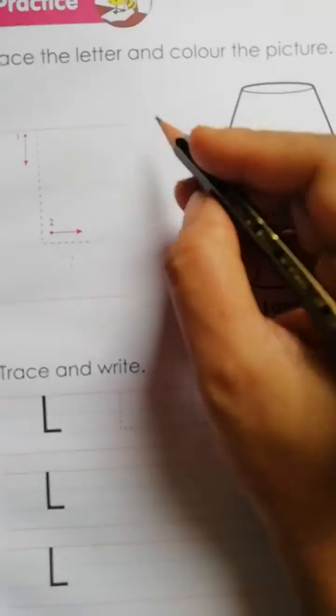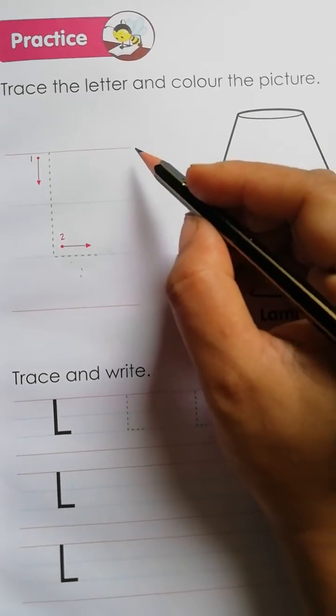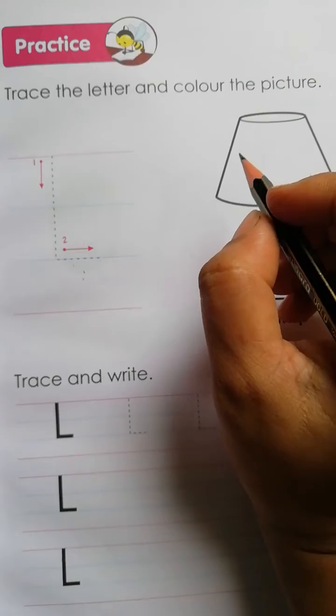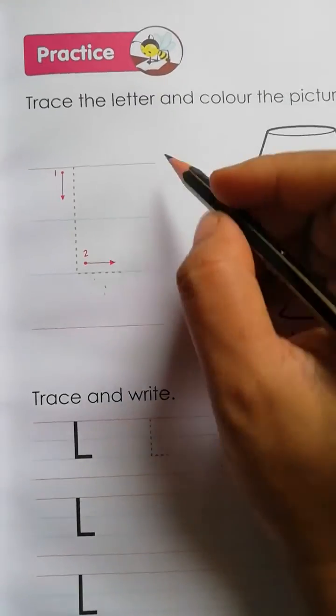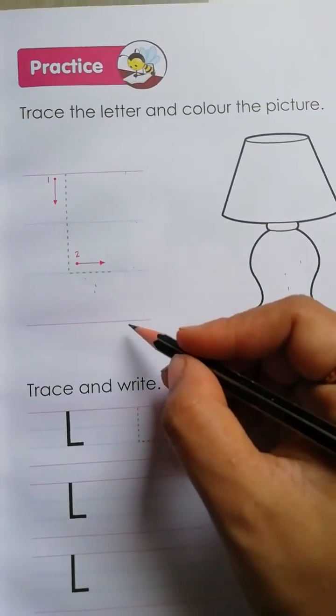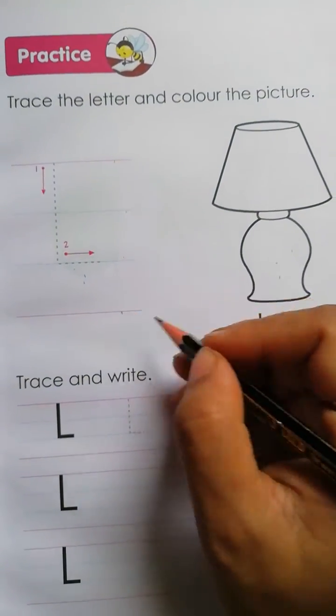Now how many lines are there? There are 1, 2, 3, 4. Four lines are there. Red line, two blue lines, then red line. Ok.